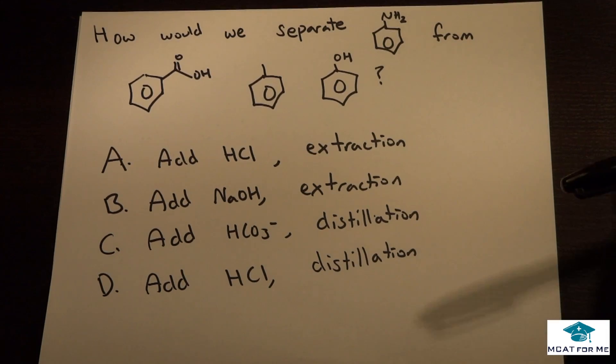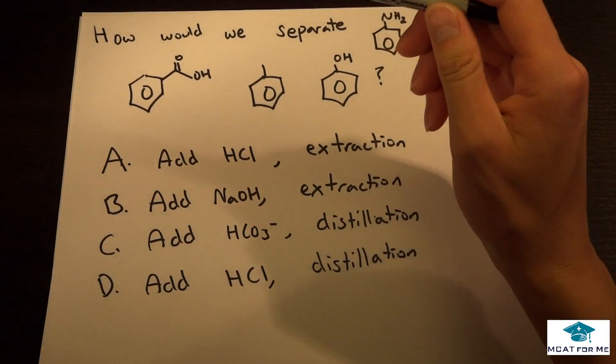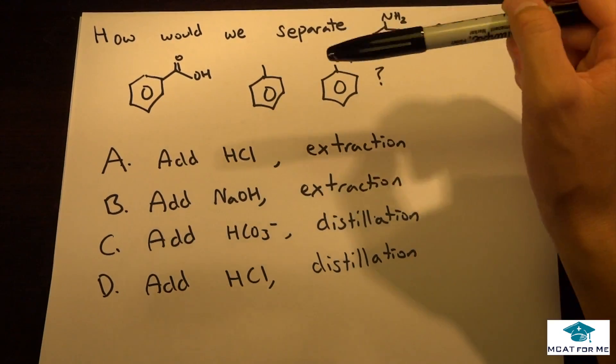So today we have an OCAM question of the day and this one is asking us how would we separate aniline from benzoic acid, toluene, and phenol?